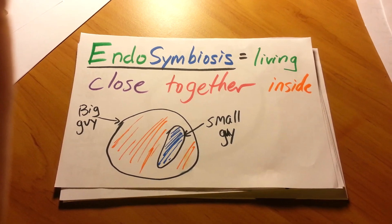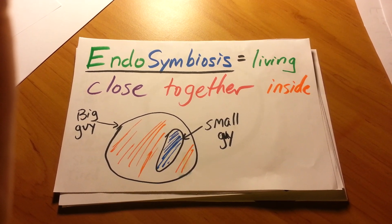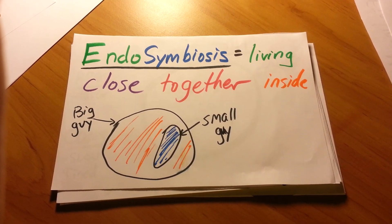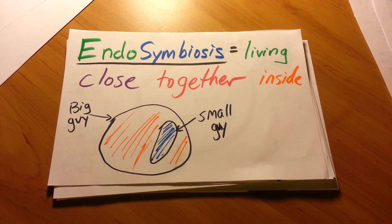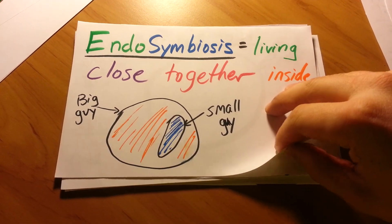So you put those words together and you get the word endosymbiosis — that means that things live closely together on the inside.